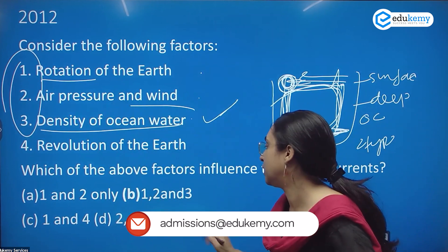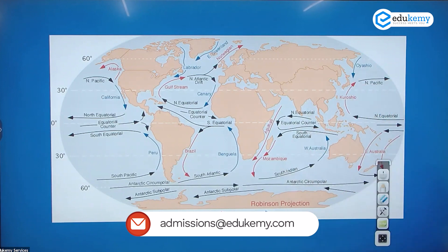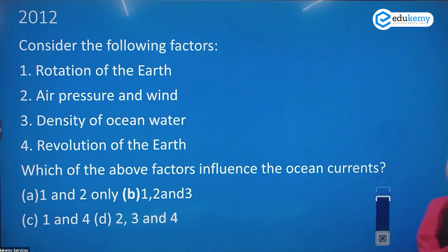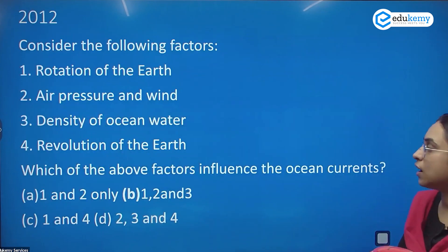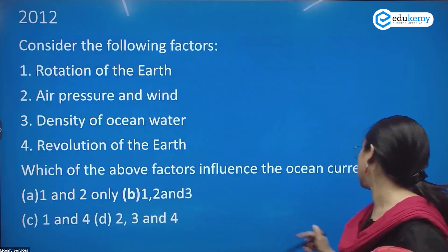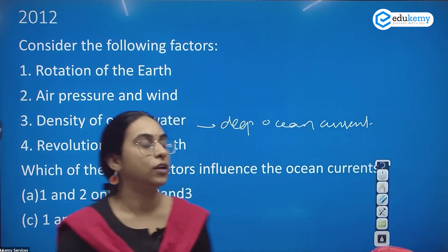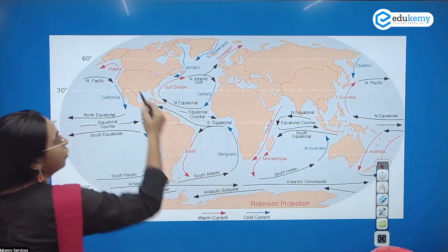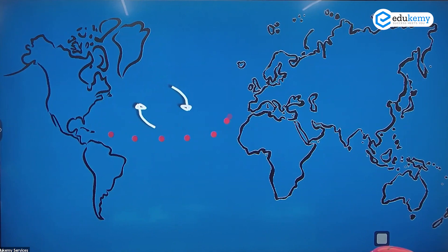All the currents we have been looking at — the Kuroshio, Gulf Stream, etc. — are surface currents. These are the surface currents shown on the map. Apart from surface currents, you also have deep ocean currents, which are driven by density. And the rotation of the earth causes the ocean currents — the gyres — to move in a circular manner. That is because of the rotation.